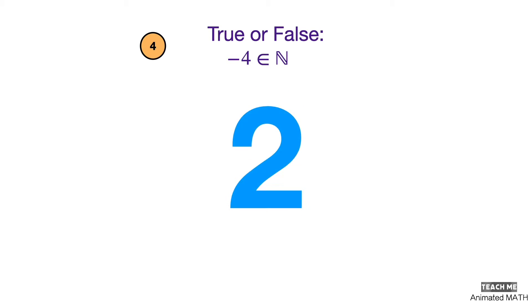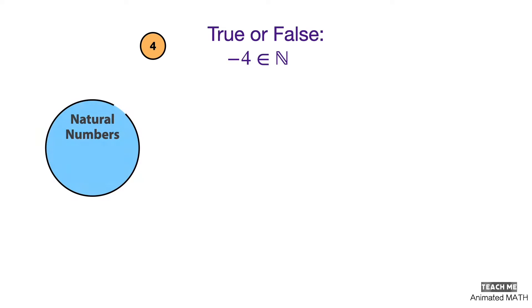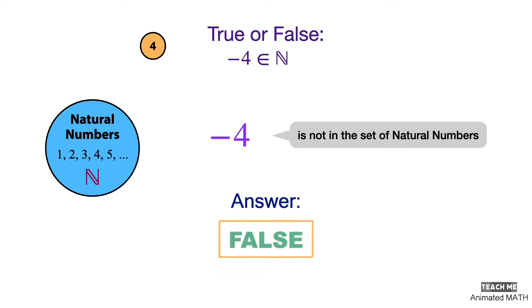Negative 4 is an element of N. N is the set of natural numbers — these are our counting numbers. Negative 4 is not in this set, so the answer is false.